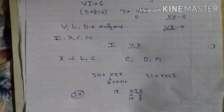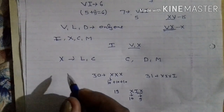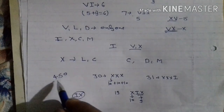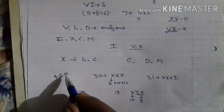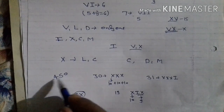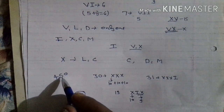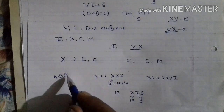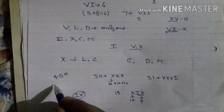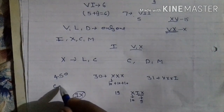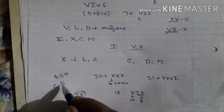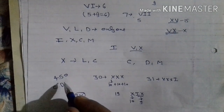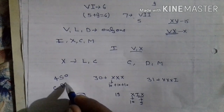We can also write larger numbers. For example, 450: D is for 500, and if we subtract 100 from 500 it will be 400, written as CD. Then 400 plus 50, written as L, gives us 450. And this other number means 550.